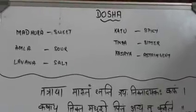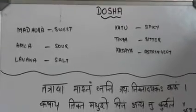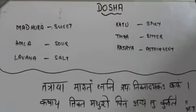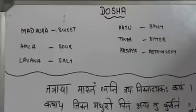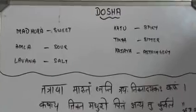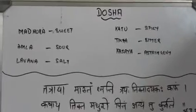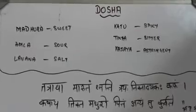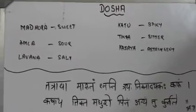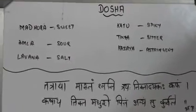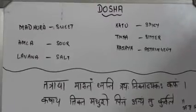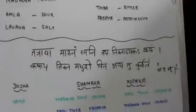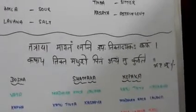Whatever dravya we speak about, it will have specific rasas — either one rasa or a combination of two or more. These rasas will have an impact on the status of the dosha in the body, either increasing or decreasing a specific dosha. We can categorize the effect into shamaka and kopaka — either vata shamaka or vata kopaka, and similarly for pitta and kapha. This relationship is described in a shloka in Ashtanga Hridaya Sutrasthana, first chapter.